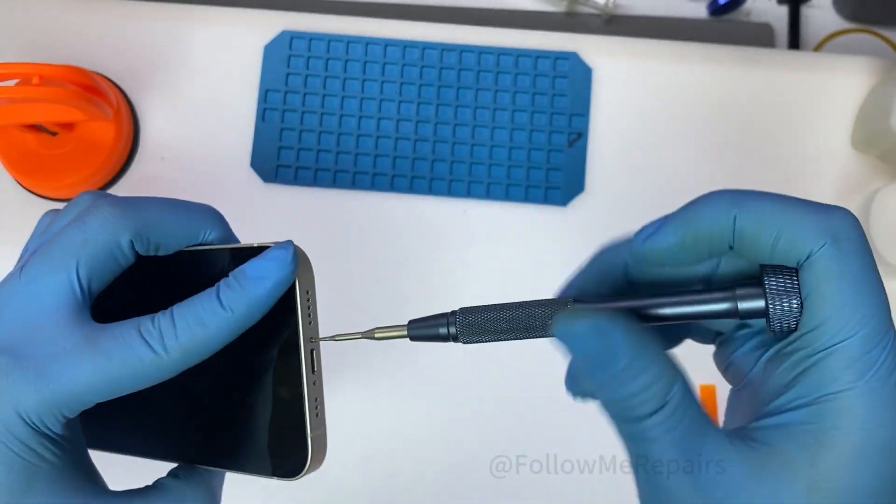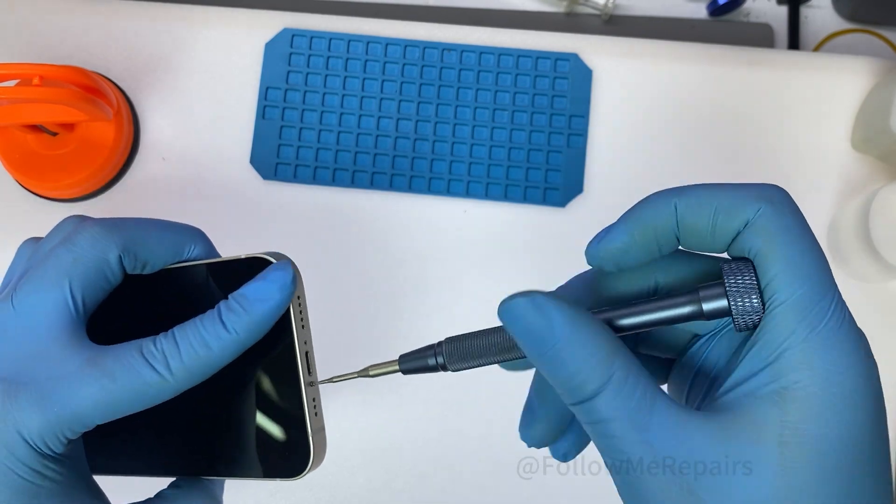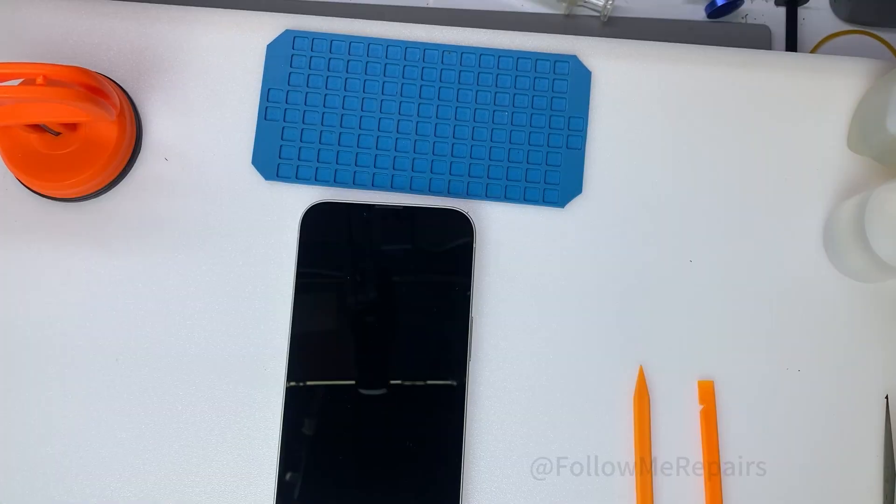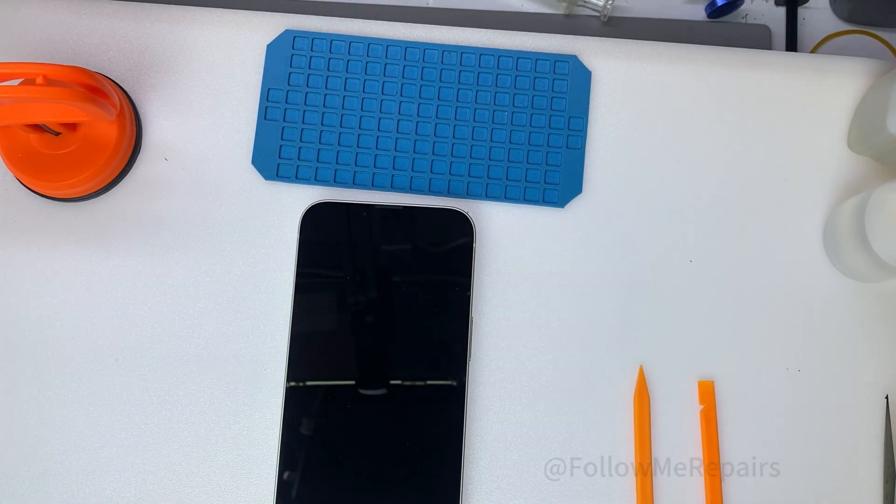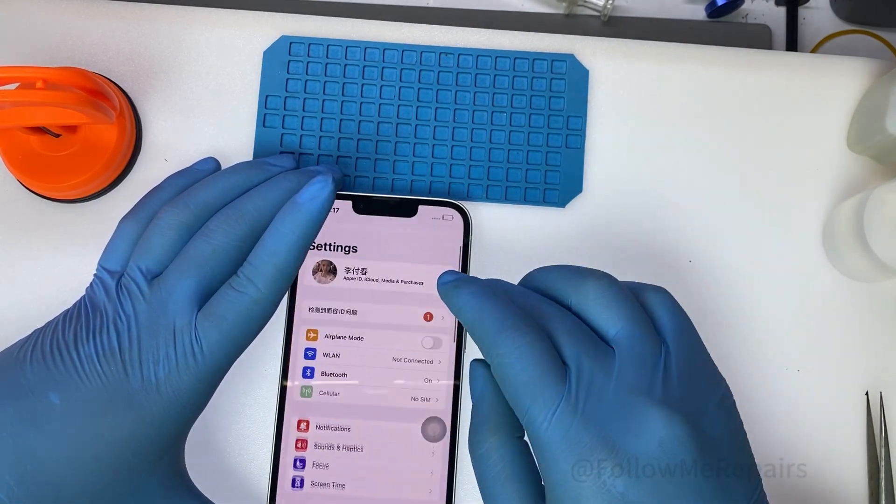Install the two bottom screws. Testing the phone, true tone is normal and the warning pop-up is gone.